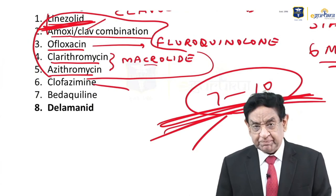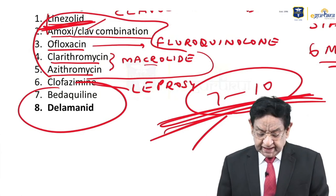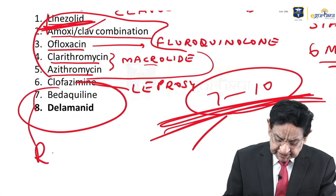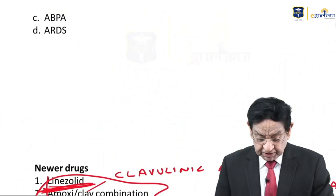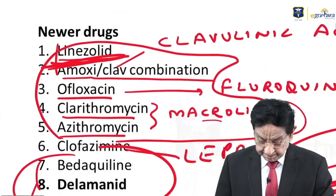Clofazimine is primarily used for leprosy but is now effective as an anti-tubercular drug. Bedaquiline and delamanid are two drugs you should not forget — they will surely come in your exam. These are the latest recent advances for treatment of tuberculosis.